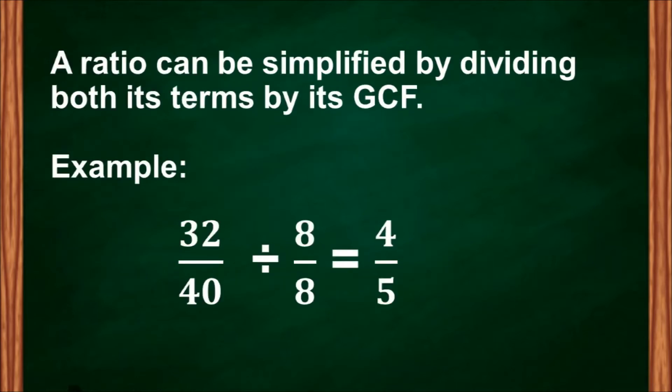A ratio can be simplified by dividing both its terms by its greatest common factor. For example, 32 is to 40. You get the GCF of 32 and 40, so you have 8. So 32 divided by 8 is 4, and then 40 divided by 8 is 5. Therefore, the simplified form of 32 is to 40 is 4 is to 5.